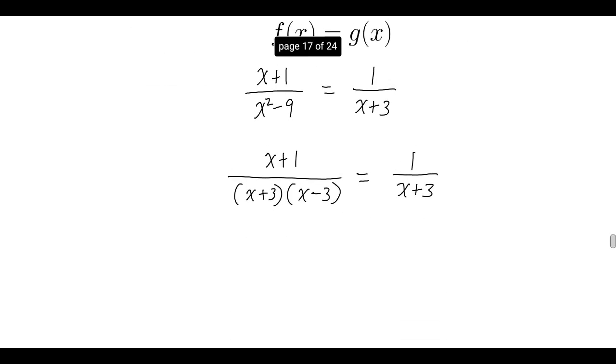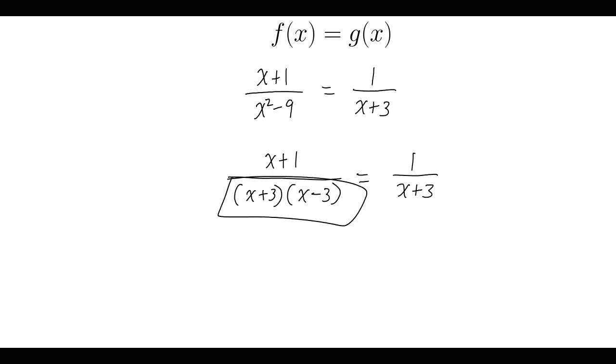Now I want to multiply both sides by the common denominator. That's going to be the combination of the denominators that includes at least part of each denominator. I'm going to multiply both sides by this x plus 3, x minus 3.